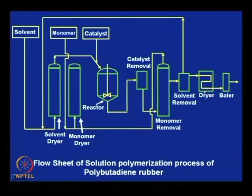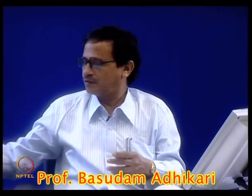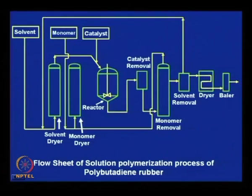After removing the solvent, the polymer is dried and then obtained in the form of sheets. Those sheets are piled together in the form of a bale - like bales of cotton layers - bales of 50 kg or 25 kg size of this polybutadiene rubber are collected from this end unit. It passes through a baler and we get polybutadiene rubber. Overall this shows the flow sheet of the solution polymerization process of polybutadiene rubber.